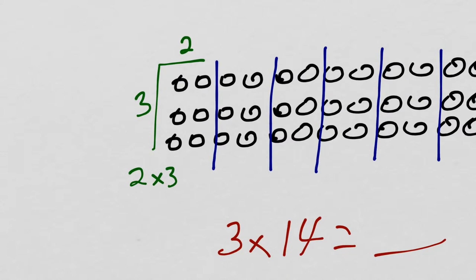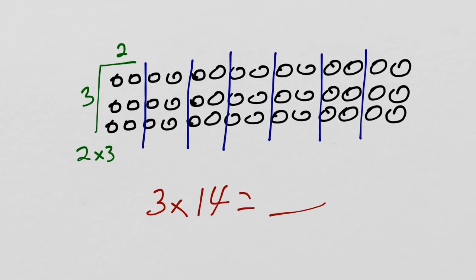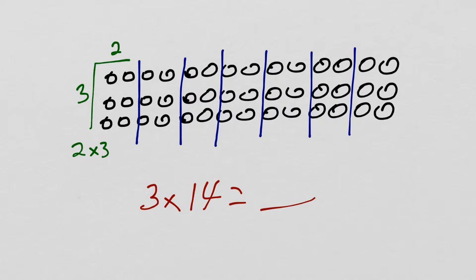If I zoom in on them and look at just one of them, I have a 2 by 3 array. This little array is 2 times 3. How many of those do I have? Let's zoom out again. I have 1, 2, 3, 4, 5, 6, 7 of those mini arrays.